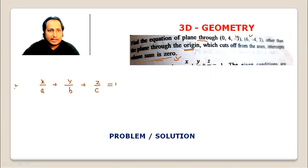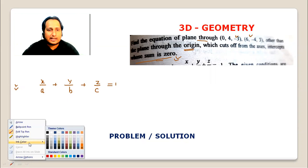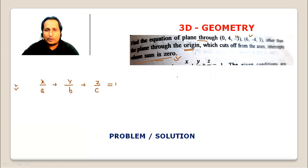Assuming this form is beneficial because the x-axis, y-axis, z-axis intercepts whose sum is zero can be directly applied. This gives me one piece of information: a + b + c equals zero.